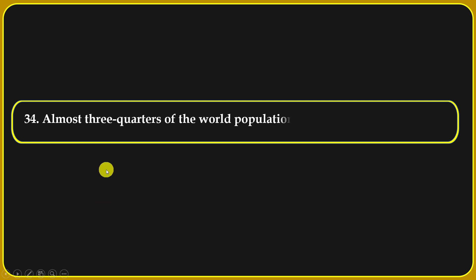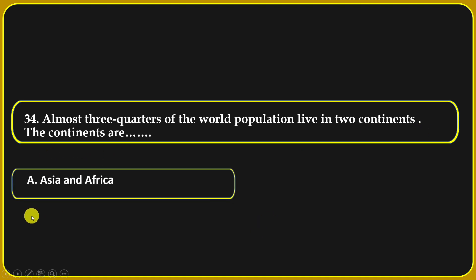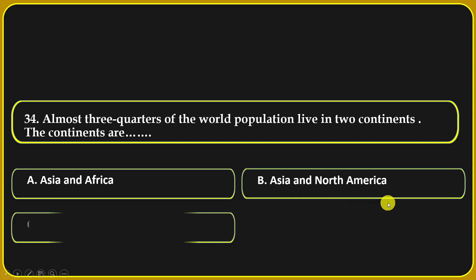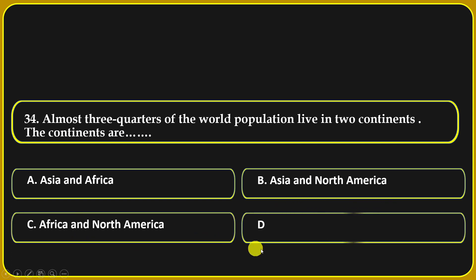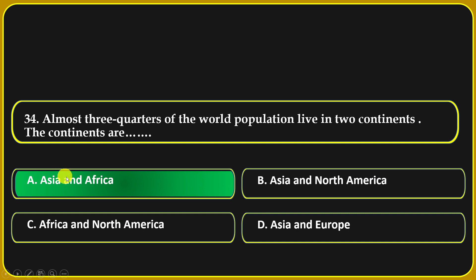Almost three quarters of the world population live in two continents. The continents are: Asia and Africa, Asia and North America, Africa and North America, or Asia and Europe. Asia and Africa is the correct answer.